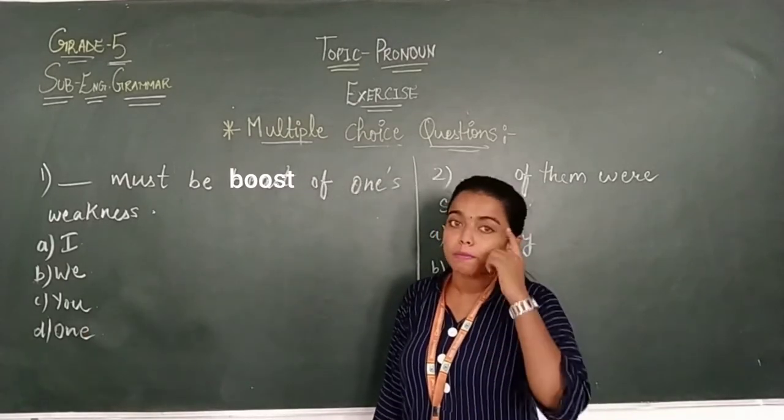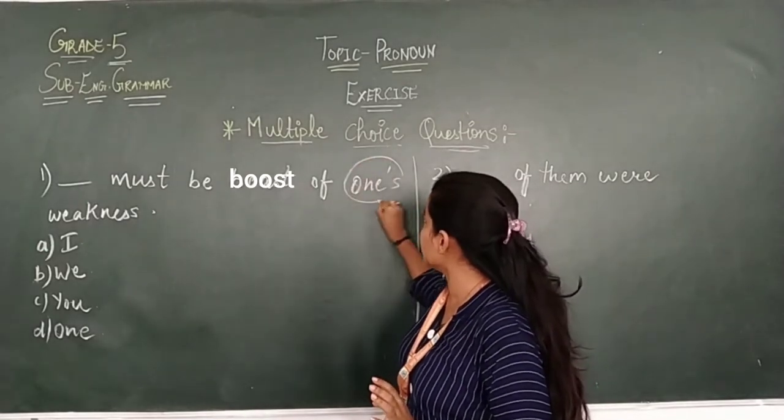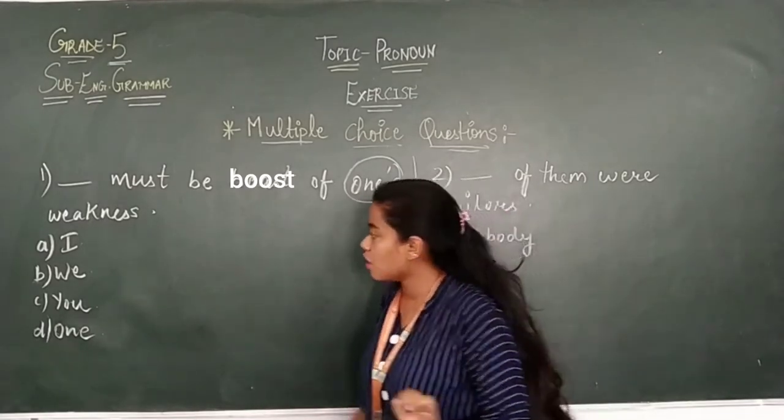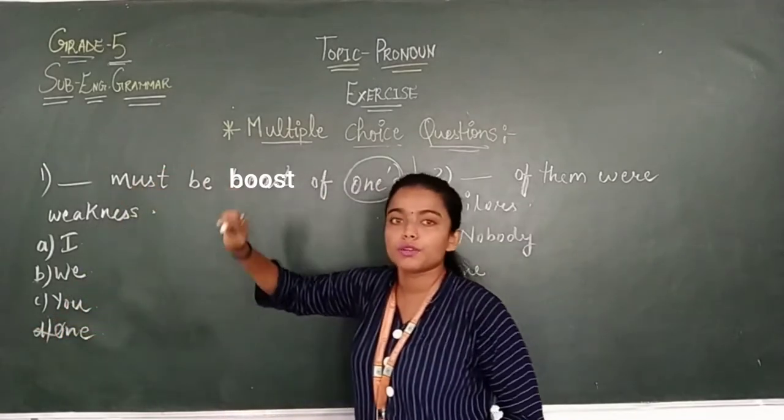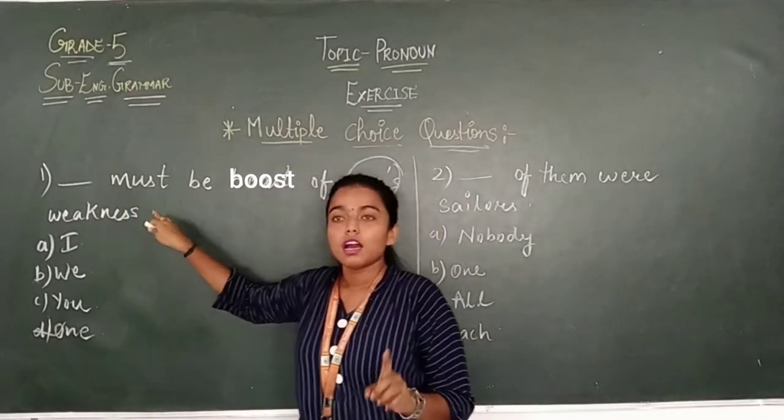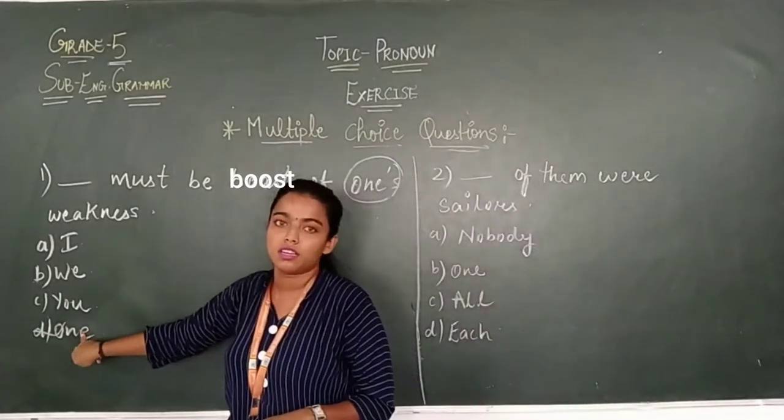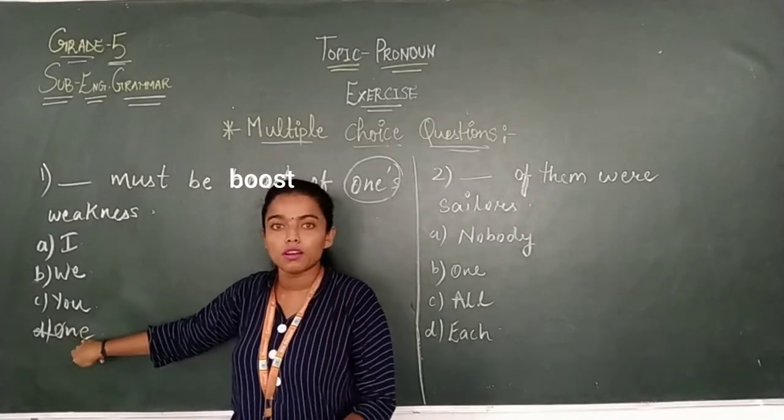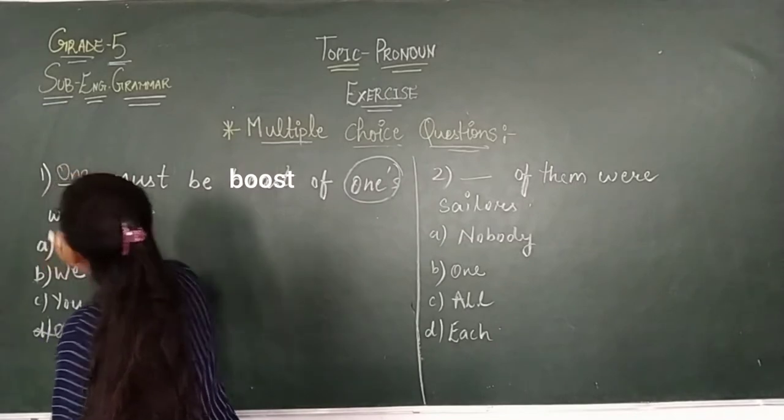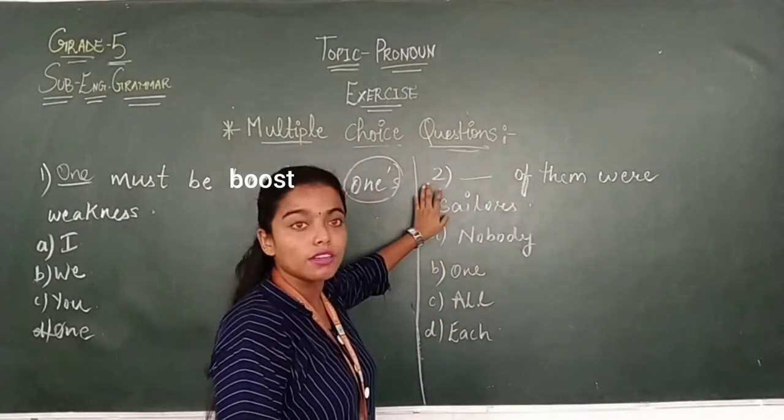So students, you should have to keep in saying, you have to keep this in mind. If this pronoun once is used, so always, sure that we will use this one. So how will the sentence be? One must be boost of one's weakness. Understood students? If once ka sentence pronoun is used, so we have to use the word pronoun one. So what will come? O-N-E, one. One must be boost of one's weakness.